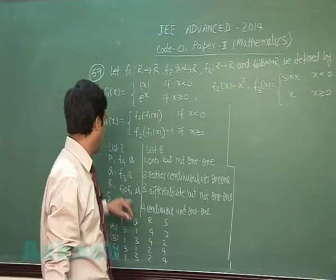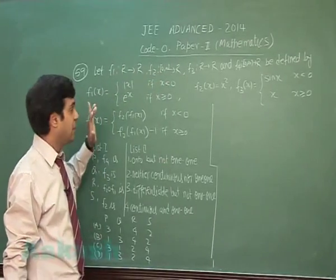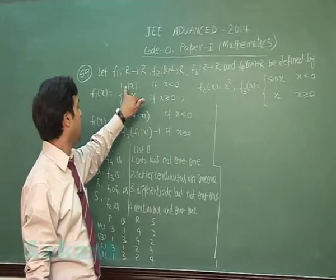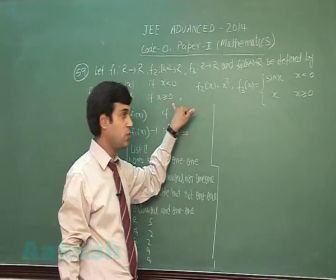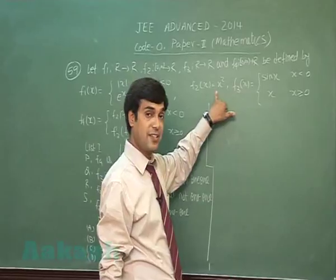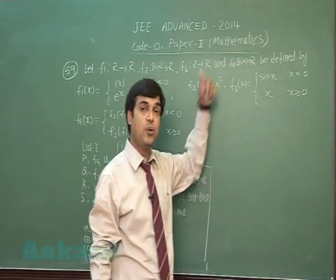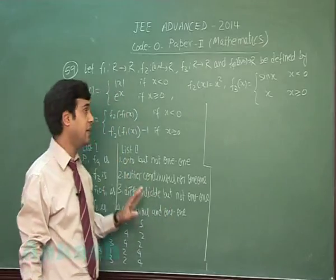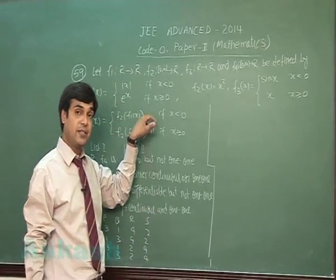Okay, question number 59. f1, f2, f3, f4 are defined as: f1 is modulus x when x is less than 0, e to the power x when x is greater than or equal to 0. f2 is x square, f3 is sin x when x is less than 0 and x when x is greater than or equal to 0 respectively.